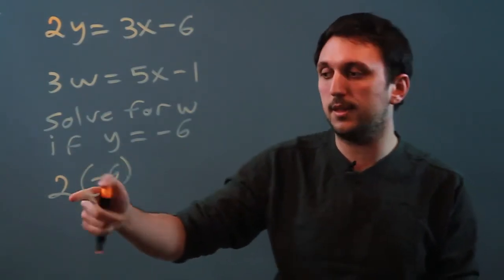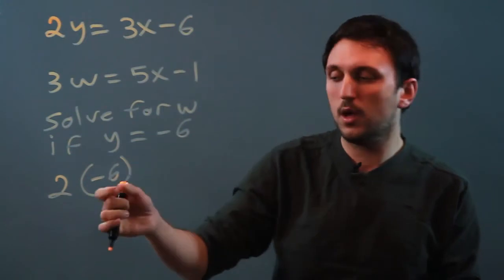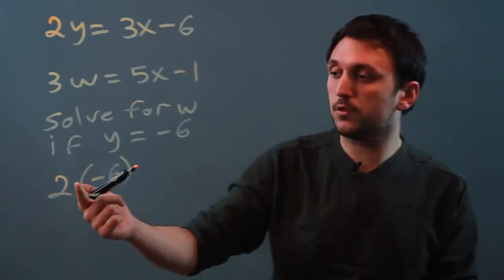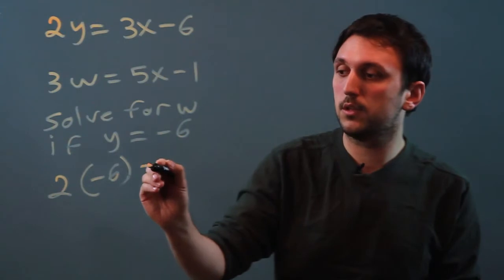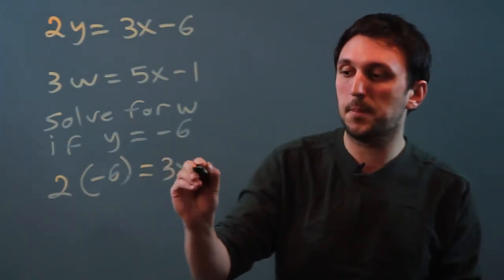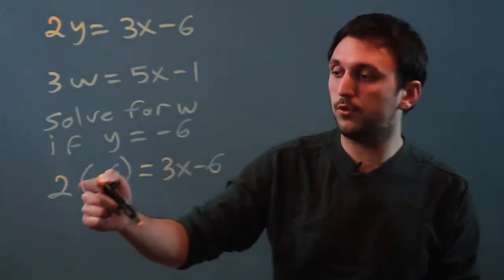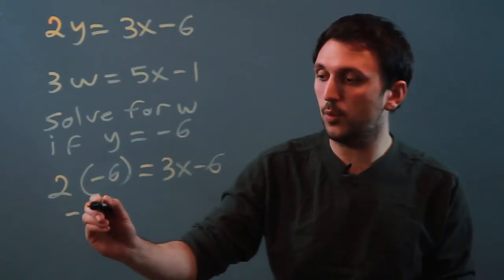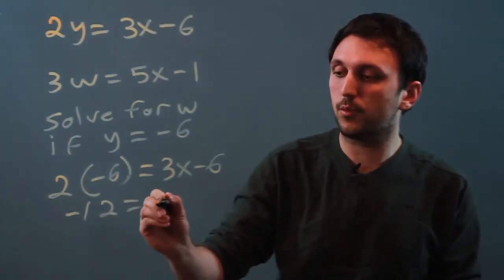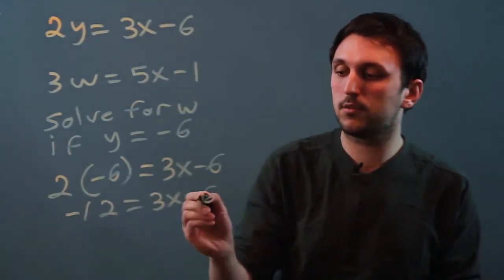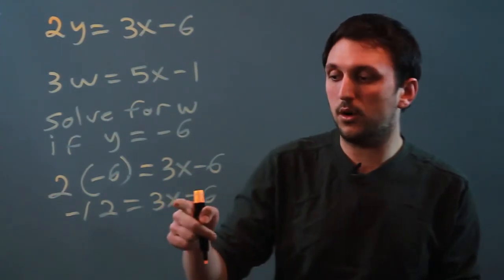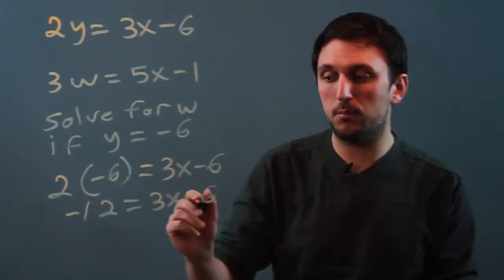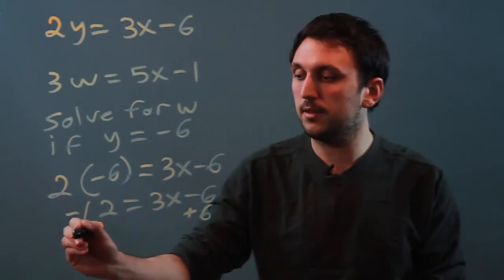Otherwise you might look at it and say 2 minus 6, or you might just multiply 2 times 6. So 2 times negative 6 equals 3x minus 6. So 2 times negative 6 is negative 12, and that equals 3x minus 6. So now we want to get all the variables on one side and all the numbers on the other, so we add 6.